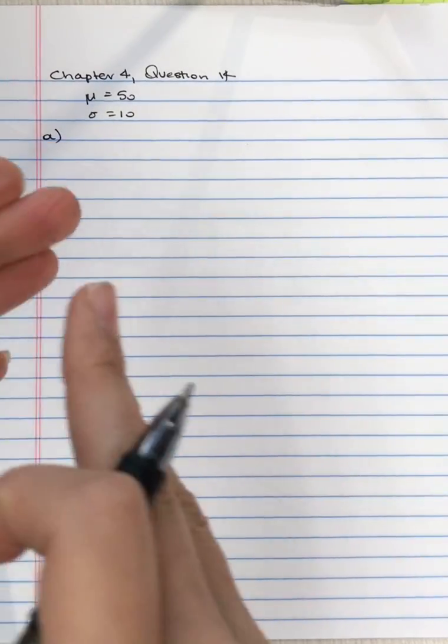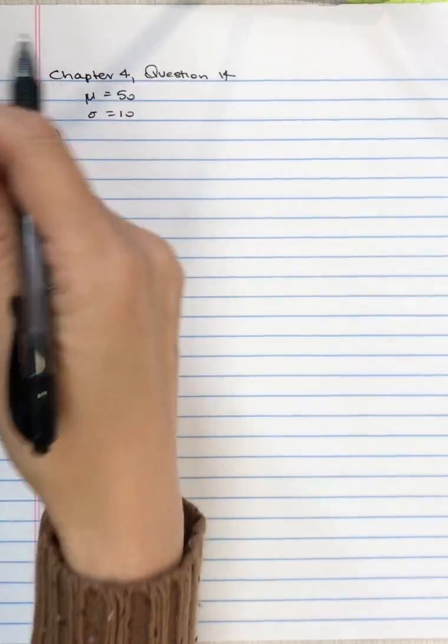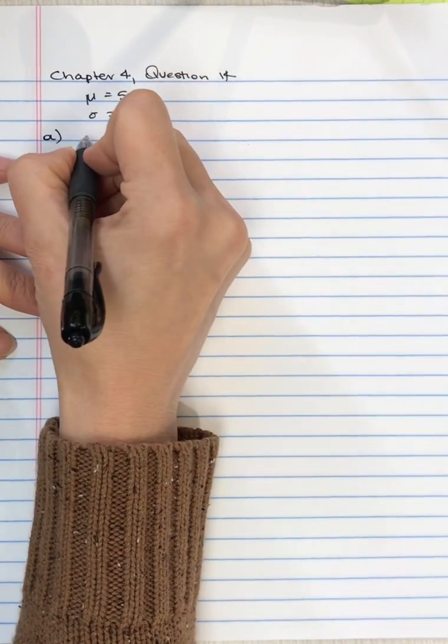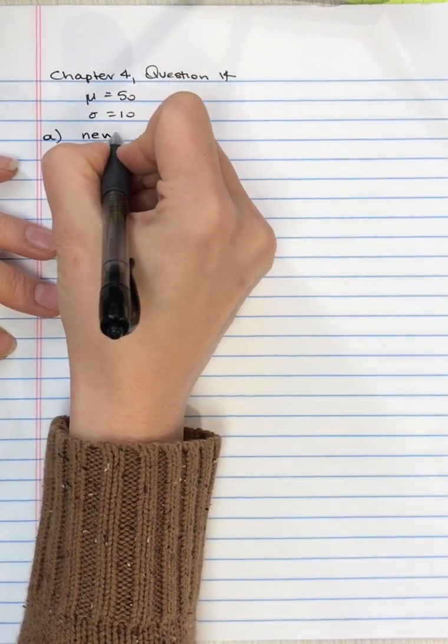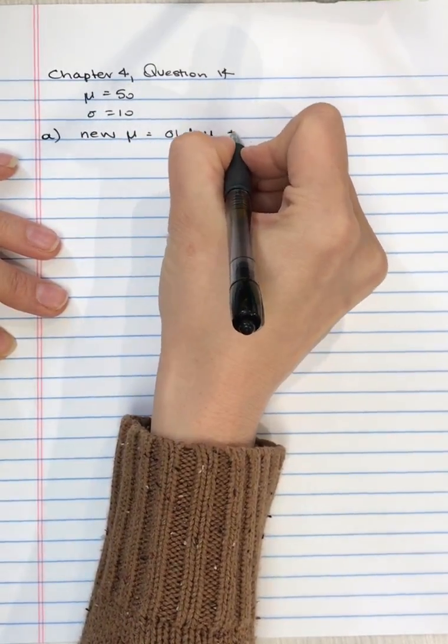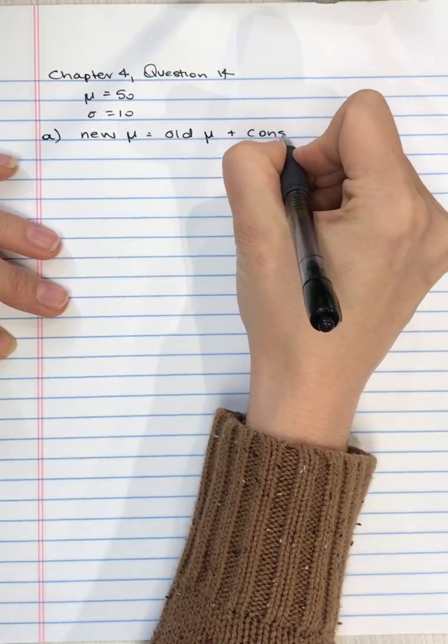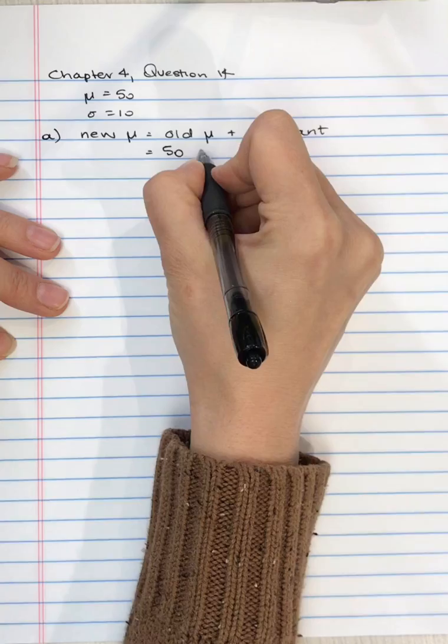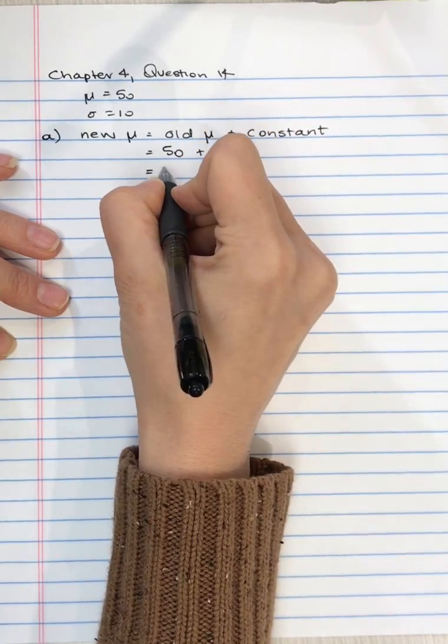If you add a constant like adding three to every score, then the mean changes by that value. So the new mean is equal to the old mean plus the constant. The old mean was 50 and the constant was three.